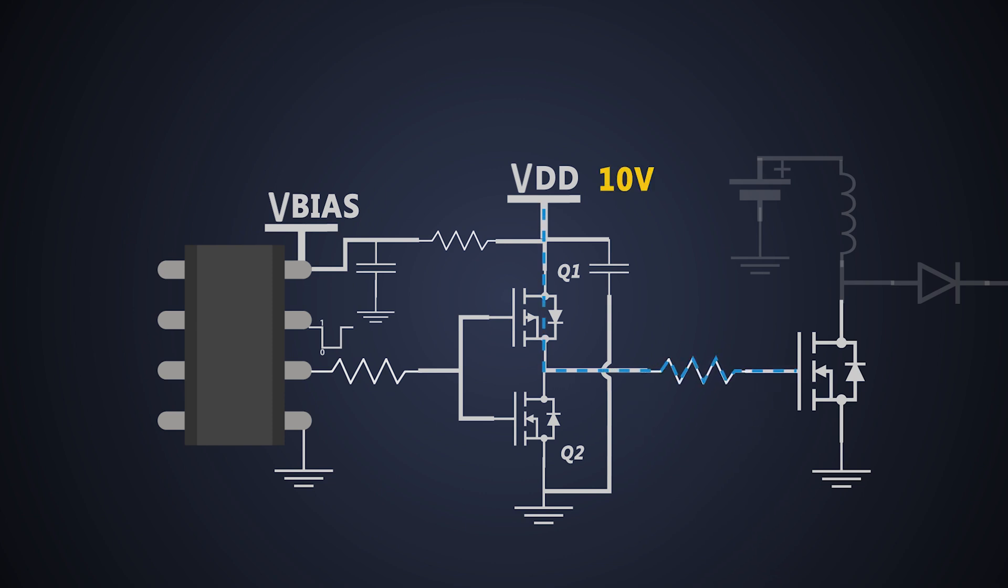If the VDD is 10V, then 10V will be the gate to source voltage provided to this MOSFET. Hence this acts as both voltage and current amplifier.